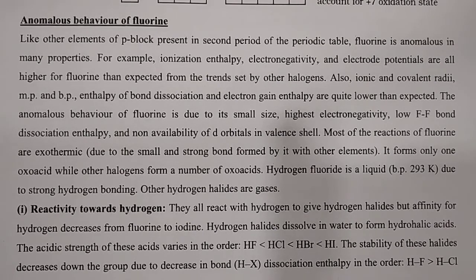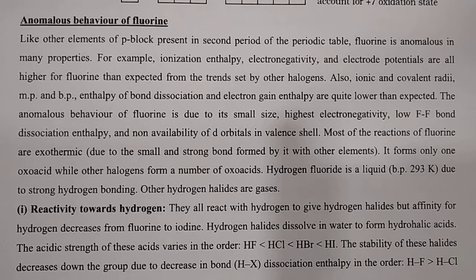This is all about today's session. In the first session, we introduced group number 17 — first covering occurrences, then electronic configuration, some physical properties, and lastly anomalous behavior. In the next session, we will start with chemical reactivity: reactions with hydrogen, oxygen, halogens, metals, and more. Thank you so much.